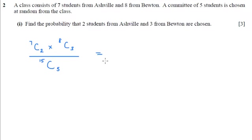On the calculator, 7C2 times 8C3 divided by 15C5 gives me 56 over 143.